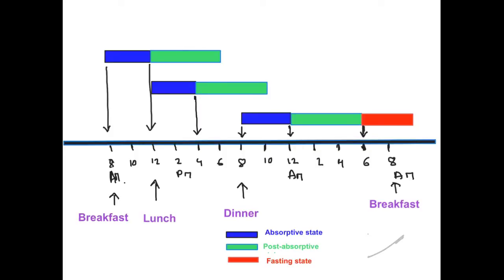By 8 p.m. we usually have dinner. When you have dinner you are breaking post-absorptive state — you have not yet entered fasting condition. After dinner you again enter absorptive state from 8 p.m. until 12 midnight. From 12 a.m., for the next six hours — through 6 a.m. — you are in post-absorptive state, shown in green.